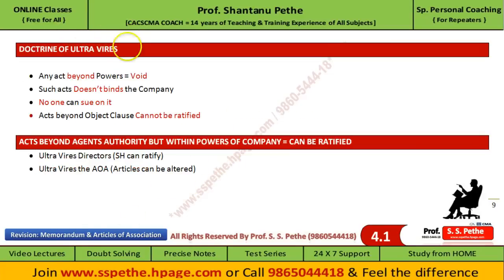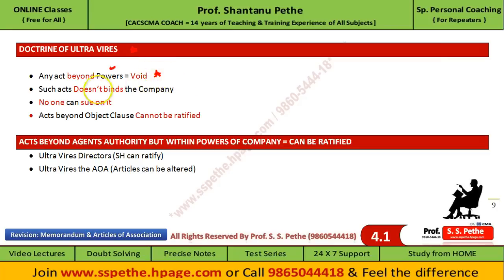Now let's see the doctrine of ultra vires — the most important topic of this chapter. Any act beyond the powers, that is beyond the objects of the company, will be treated as void and will have no effect. For example, if a cotton company purchases land for manufacturing wine, such a contract will be void because wine-making is not the object of the company. Such a contract which is beyond the object clause does not bind the company; no one can sue on it. Acts beyond the object clause cannot even be ratified by the shareholders. However, acts beyond the agent's authority but within the powers of the company can be ratified.